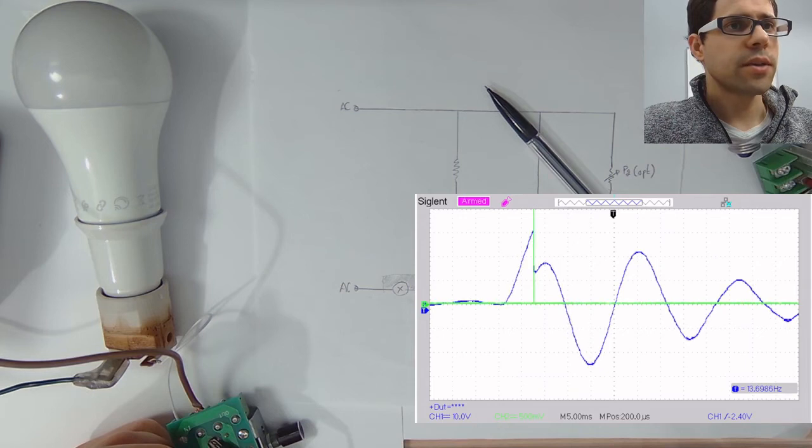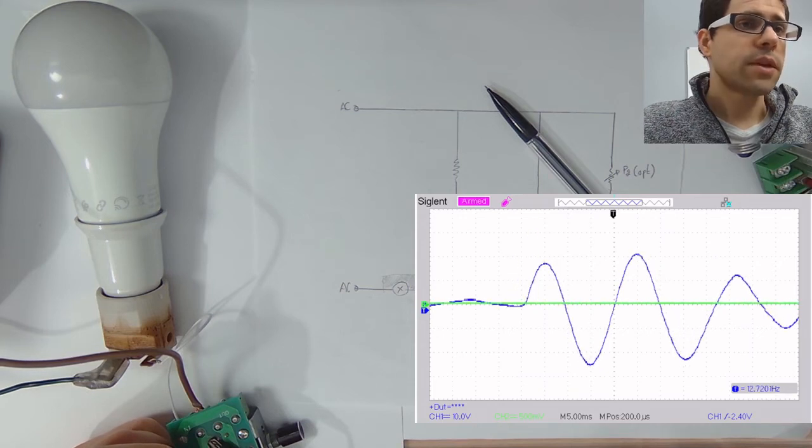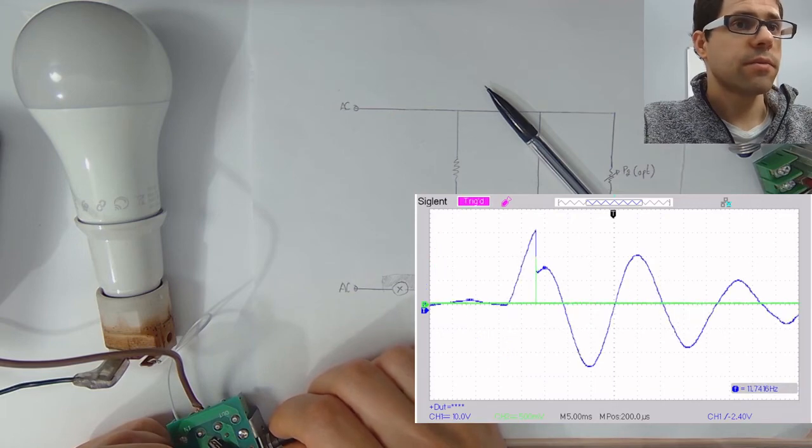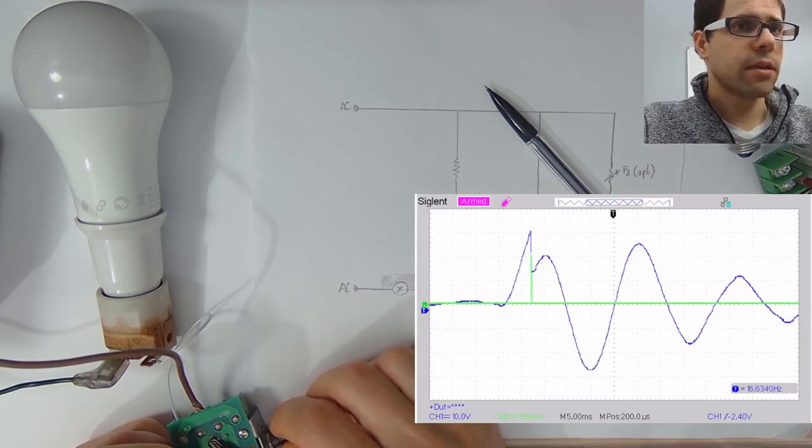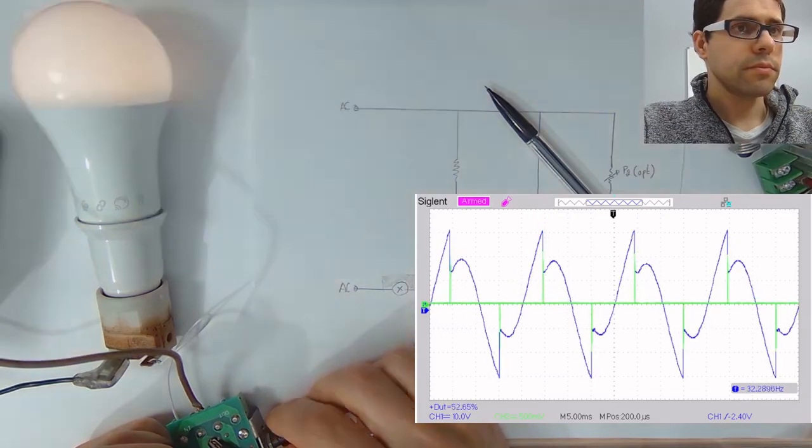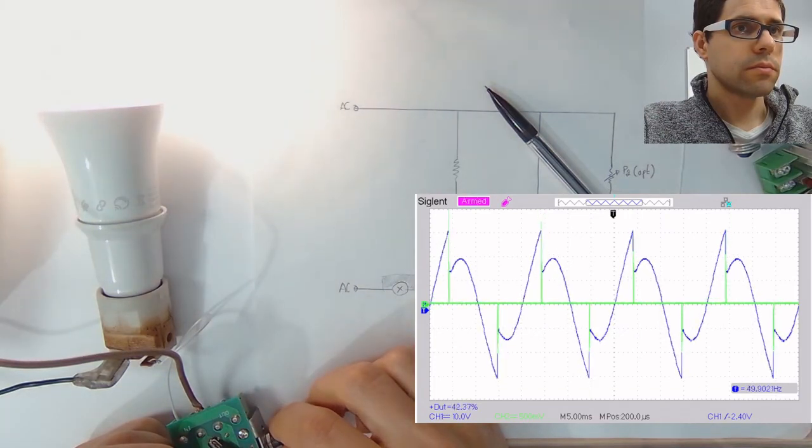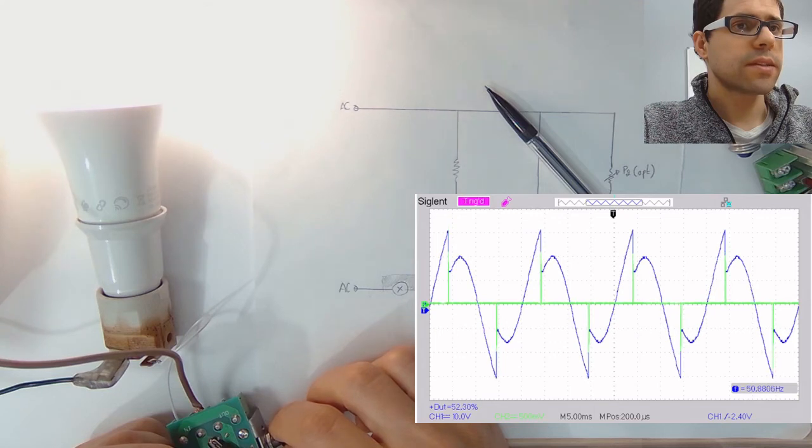In a few occasions you can see that it's triggered. There's a pulse going on. The light is still off. As I increase the duty cycle, we can see that the triac starts conducting.